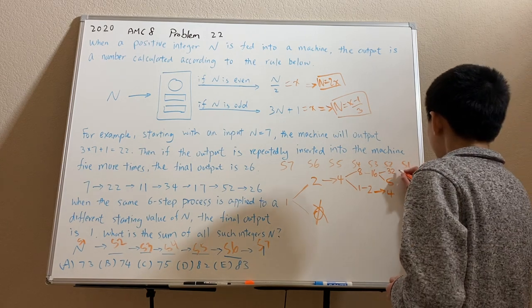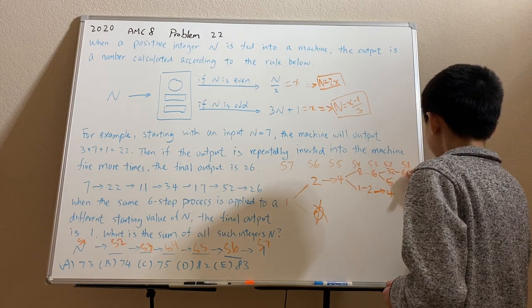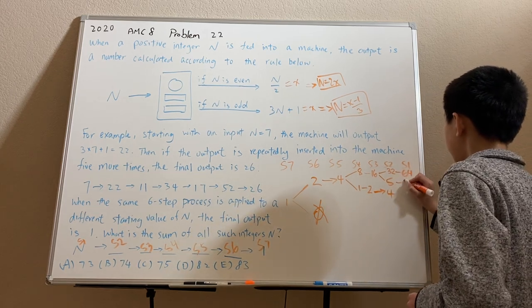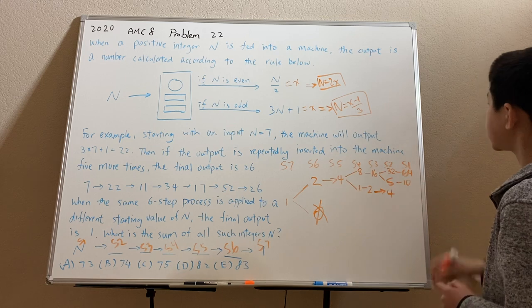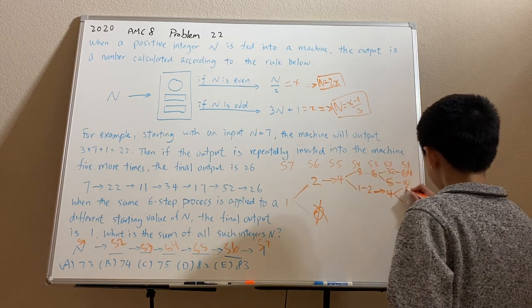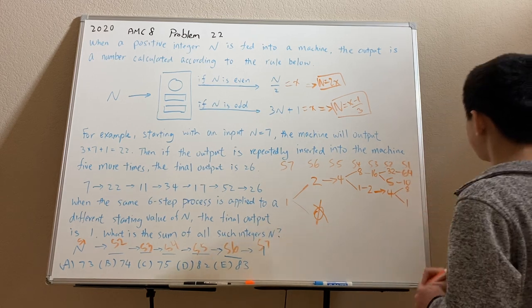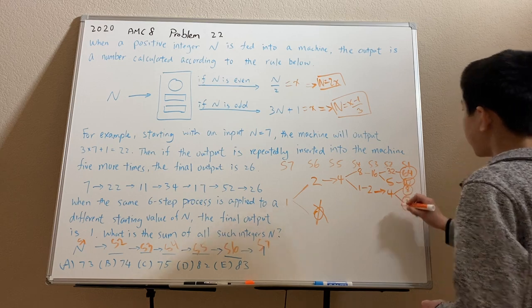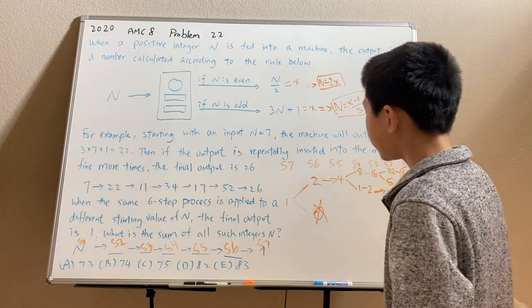And then finally, stage 1. The only thing that will work here is 64. 10 is the only thing that will work here because 5 minus 1 over 3 is not an integer. And for 4, there's going to be two cases: n is 8 or 1. So these are the final values of n that will result in a 1 at stage 7.